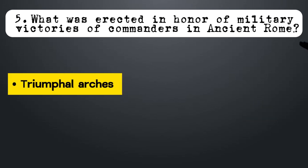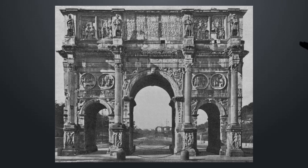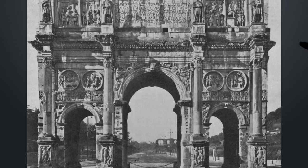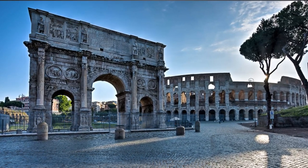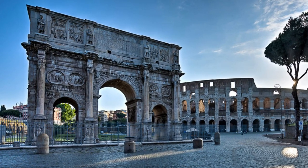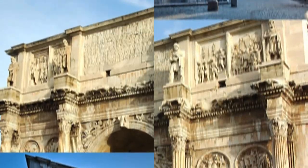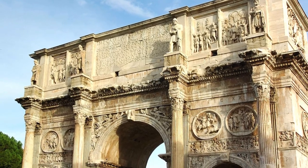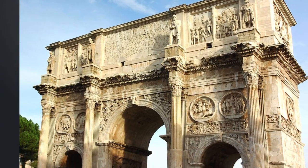In ancient Rome, triumphal arches were erected in honor of great military victories and conquering emperors. They were installed at the city's entrance or main street. Some surviving and recognizable examples include the Arch of Titus, the Arch of Septimius Severus, and the Arch of Constantine.